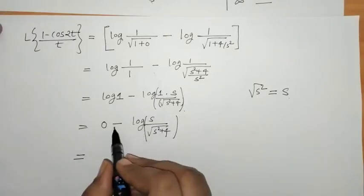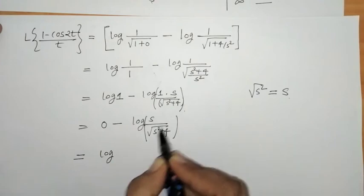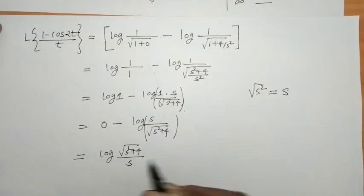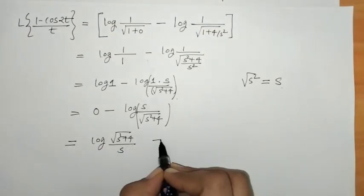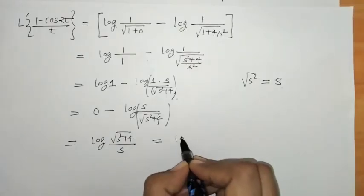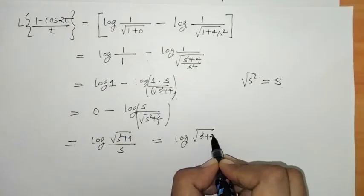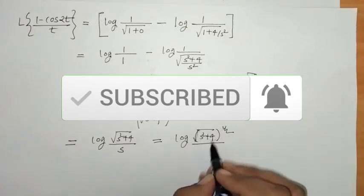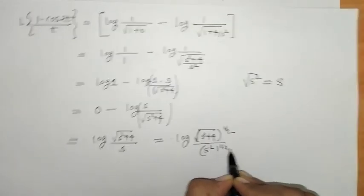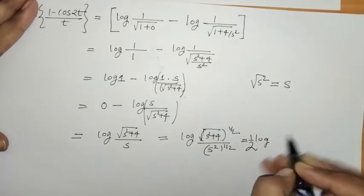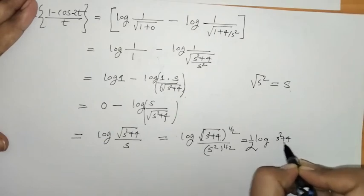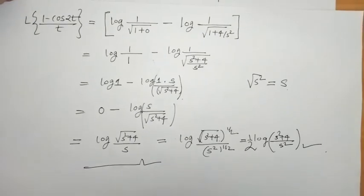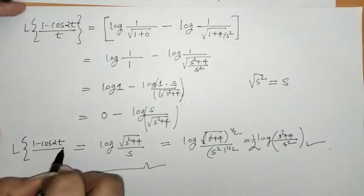By the log rule, this can be rewritten as log(√(s² + 4)) - log(s), or equivalently (1/2)log(s² + 4) - log(s), which is (1/2)log((s² + 4)/s²). This is the Laplace transform of (1 - cos(2t))/t.